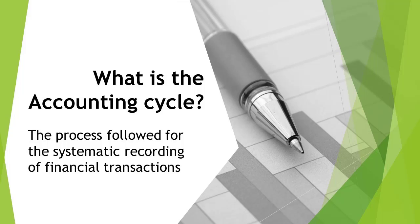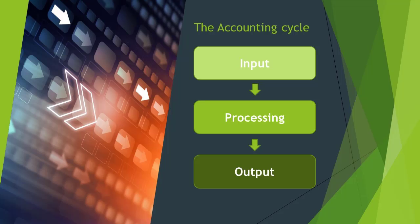Certain processes in the cycle take place daily — for example, the recording of transactions. Others monthly — for example, posting to the general ledger. And some annually — for example, the preparation of the financial statements. The accounting cycle can be divided into three phases.